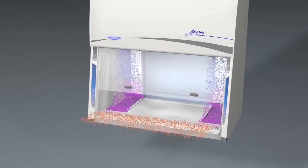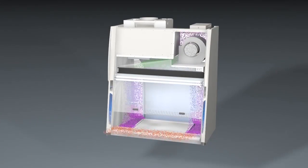The recirculated air is drawn up the back of the cabinet and is controlled by the supply blower.